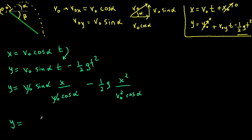so now let's just rewrite this. We have y equals tangent alpha times x minus one-half g over v-naught squared cosine cosine alpha times x squared. So notice that this is the equation of a parabola, and this is in Cartesian coordinates.